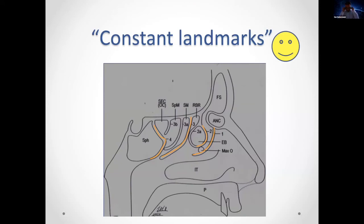The most important concept to take away is the four constant landmarks in endoscopic sinus surgery, shown as orange lines: first, the uncinate process; second, the face of the bulla; third, the basal lamella of the middle turbinate; and fourth, the face of the sphenoid sinus. These are present in primary surgery and serve as fallback landmarks if you become disoriented.